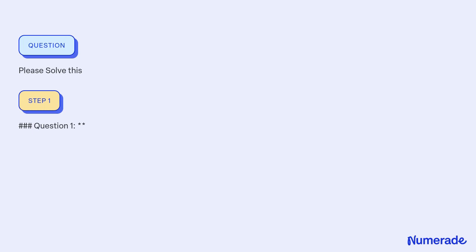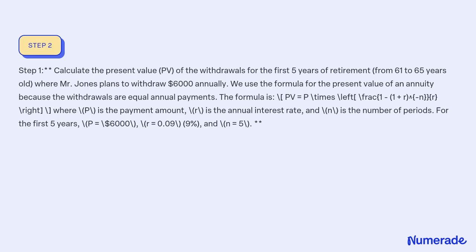Question 1. Step 1: Calculate the present value (PV) of the withdrawals for the first 5 years of retirement, from 61 to 65 years old, where Mr. Jones plans to withdraw $6,000 annually.